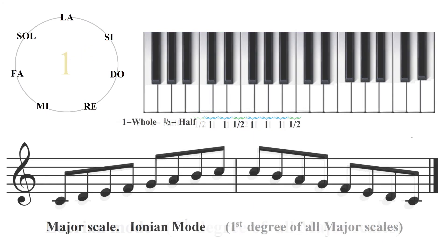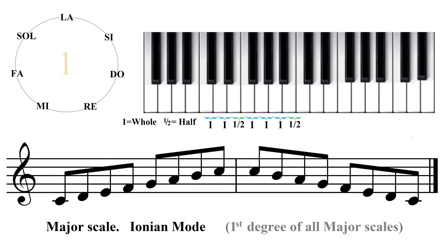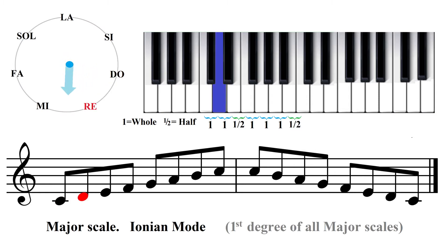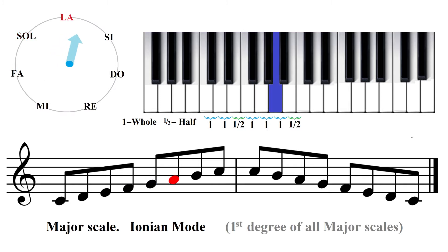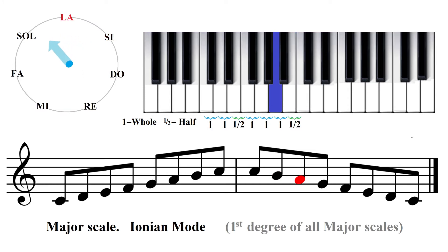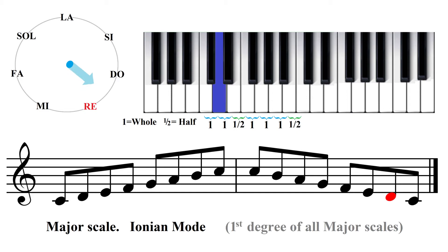Moving up to the next scale degree, we're back at one, in Do major, Ionian mode, starting on Do. Do, Re, Mi, Fa, Sol, La, Si, Do. Si, La, Sol, Fa, Mi, Re, Do.